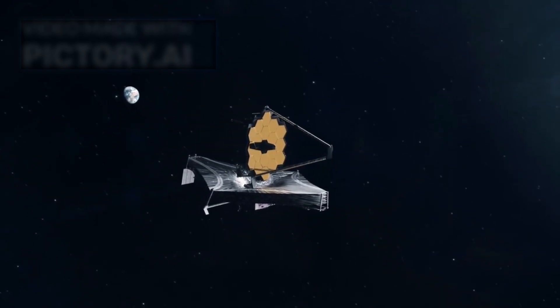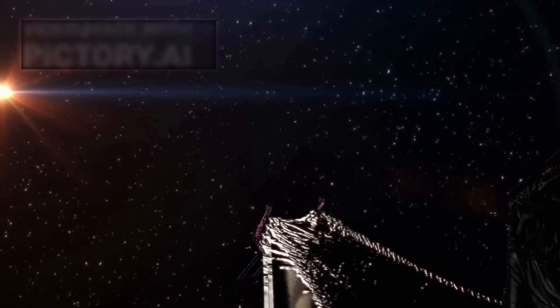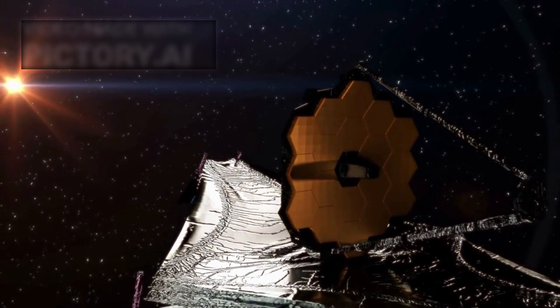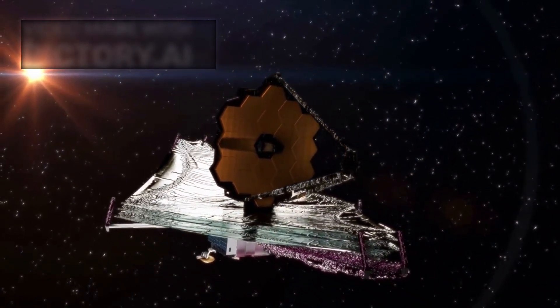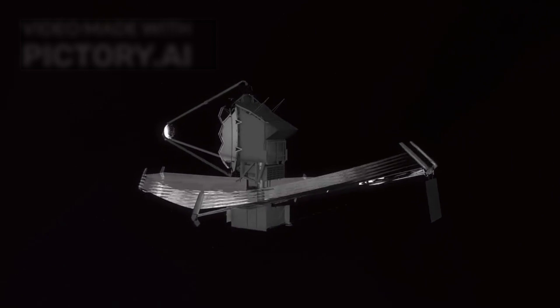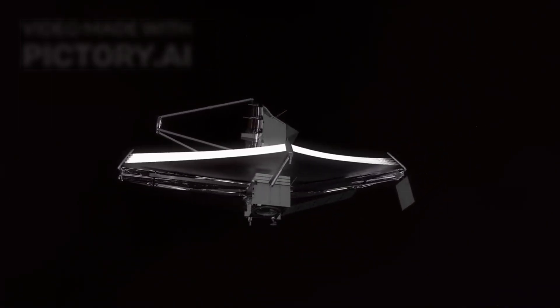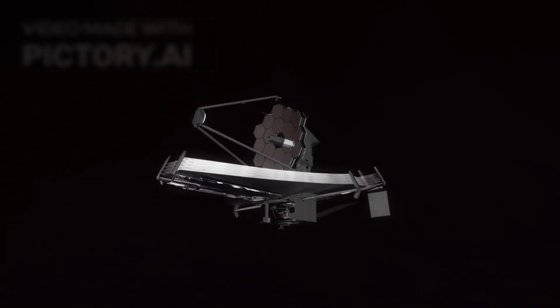The James Webb Space Telescope, or JWST, launched in December 2021, is humanity's most ambitious eye on the cosmos. With a 6.5 meter primary mirror made of 18 hexagonal segments, it is more than two and a half times larger than Hubble's mirror, allowing it to collect vastly more light.